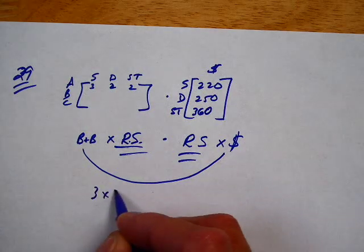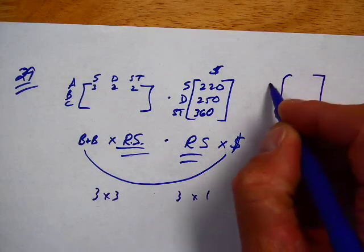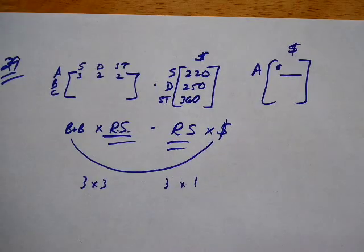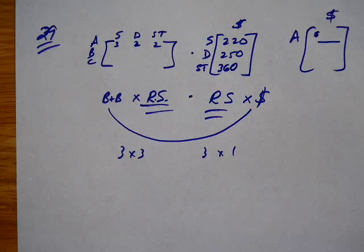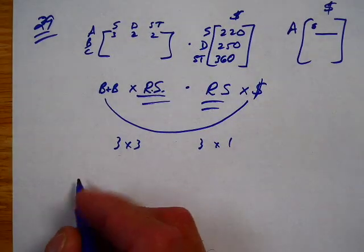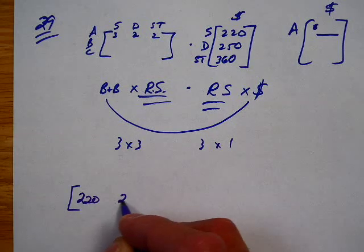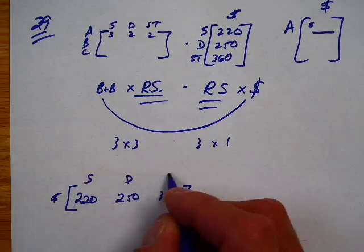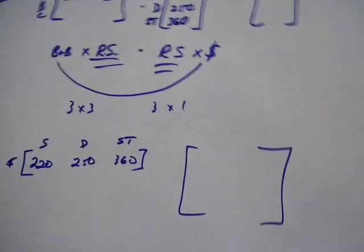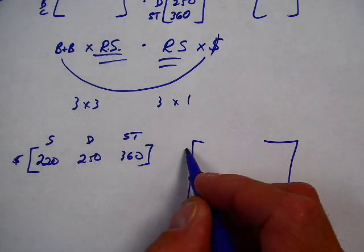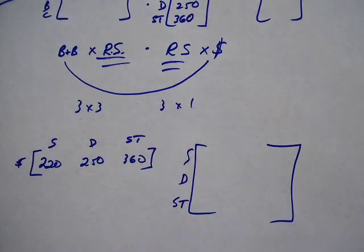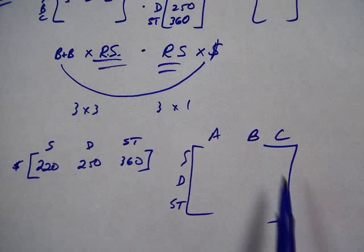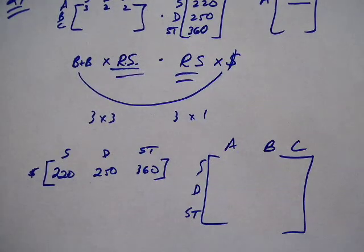This is a three-by-three times a three-by-one, so we would have a matrix that looks like this — a dollar amount. Or you could go like this: 220, 250, 360 as dollar amounts for single, double, suite. But then when you write the other matrix, you'd need single, double, suite over here, and bed and breakfast A, B, C here. That's switched around compared to our original matrix.